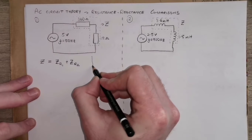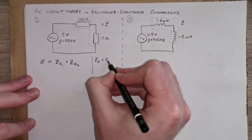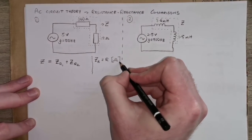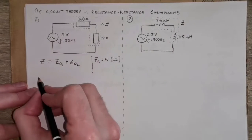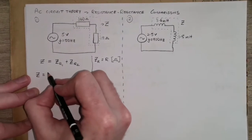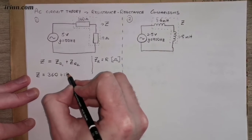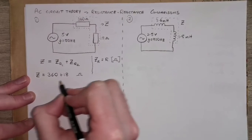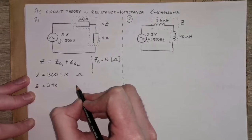For a resistor, the impedance of any resistor is just its resistance, measured in ohms. So that makes this first example quite easy. The total impedance of that circuit would be 360 plus 18 ohms, so the total impedance is just 378 ohms.